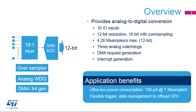The ADC module itself is a 12-bit successive approximation converter with additional oversampling hardware. Under certain conditions, the oversampled output can have a 16-bit result. The sampling speed is more than 4 megasamples per second.